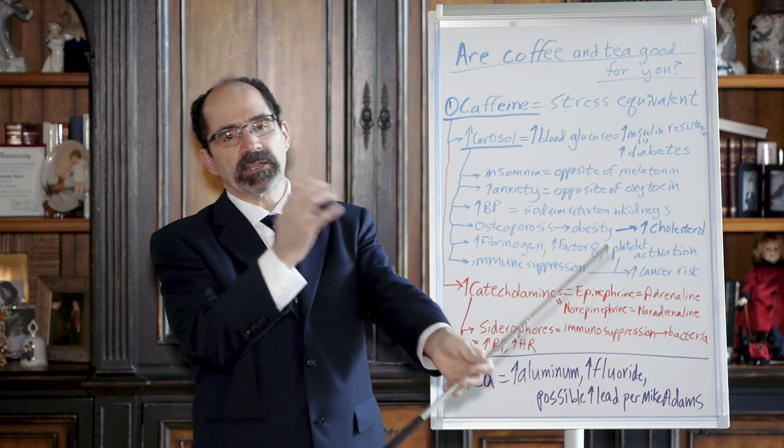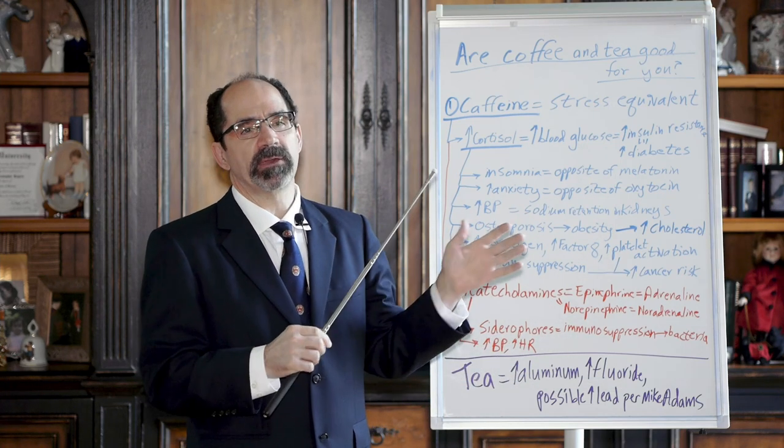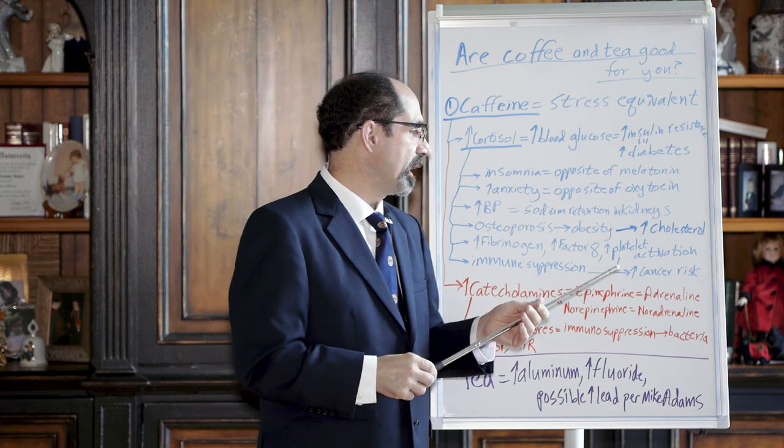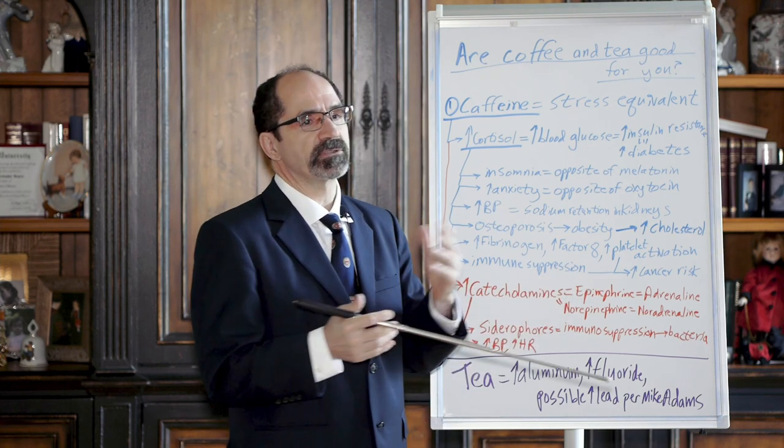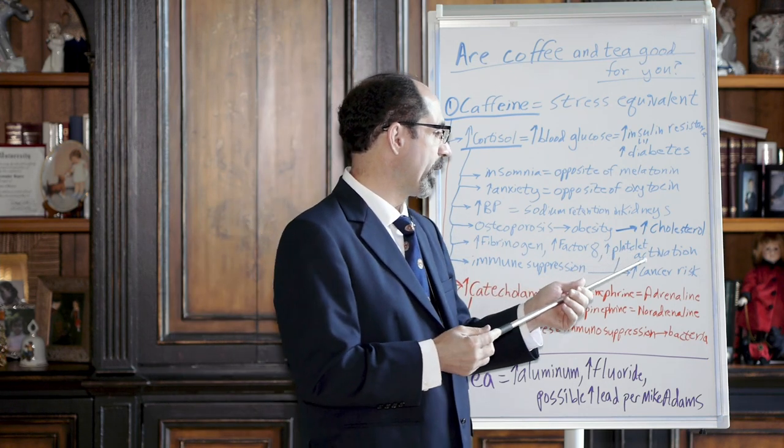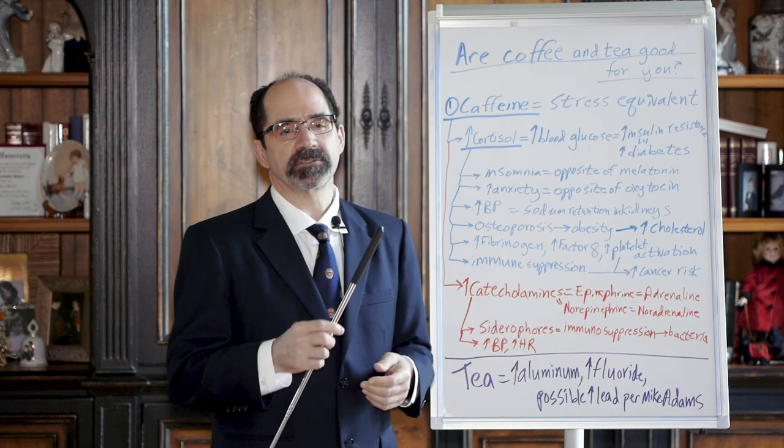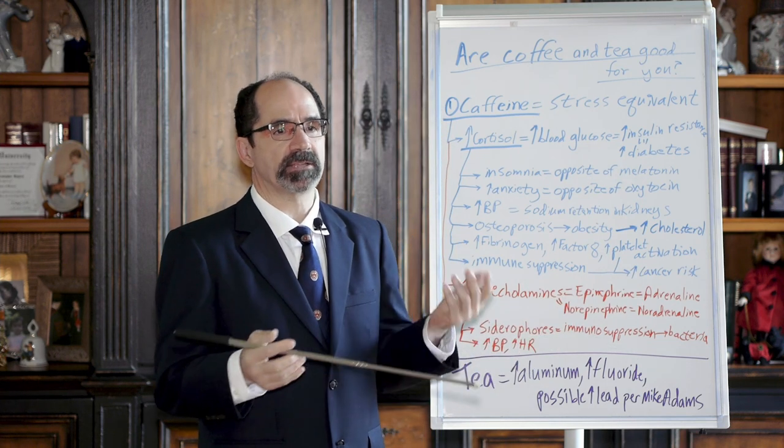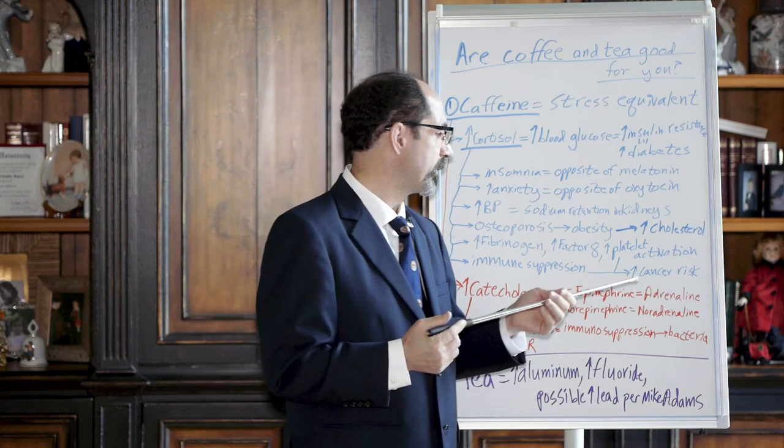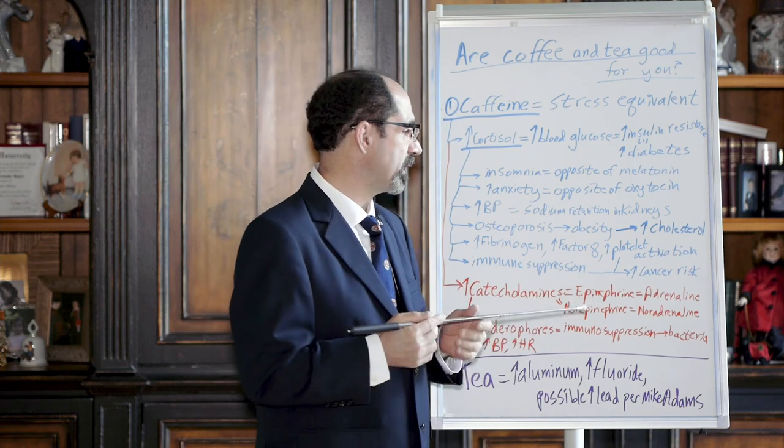You don't want to be forming clots unless you have active bleeding. Theoretically, if you got scratched by a tiger and you bled, you'd be able to clot off the bleeding site faster. But when it's just psychological stress or from drinking caffeine, you don't want to be hypercoagulable. The reason people die is because they get a myocardial infarction when an artery clots off. The reason they have a stroke is because they have a clotted artery in the brain. So you don't want unnecessary clotting.